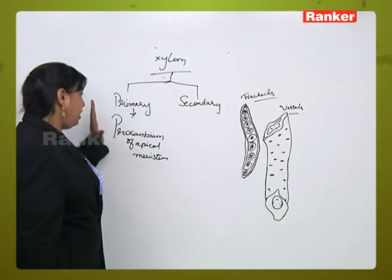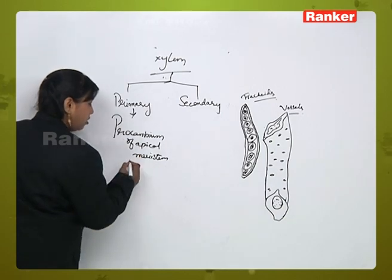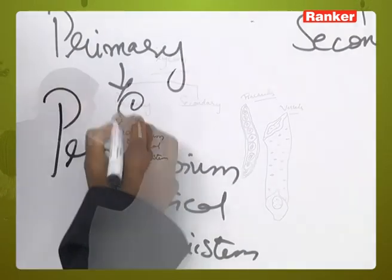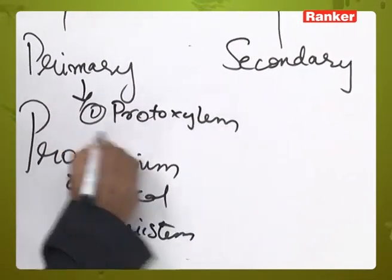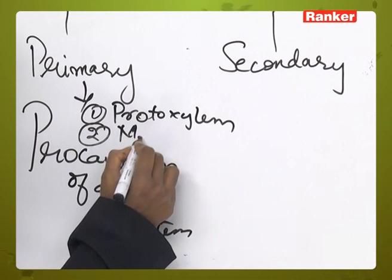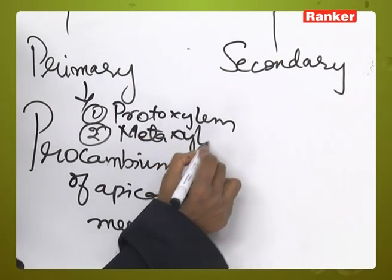And again, this primary xylem is of two types. First one is protoxylem, second one is metaxylem.